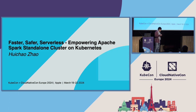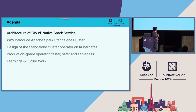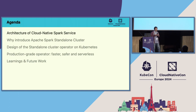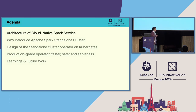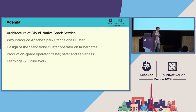I'll firstly introduce our existing platform and how we run Spark workloads on Kubernetes. Then I'll cover what challenges we are facing right now and why we introduced this new way. Then I'll give you some high-level design principles and the detailed implementation for that.